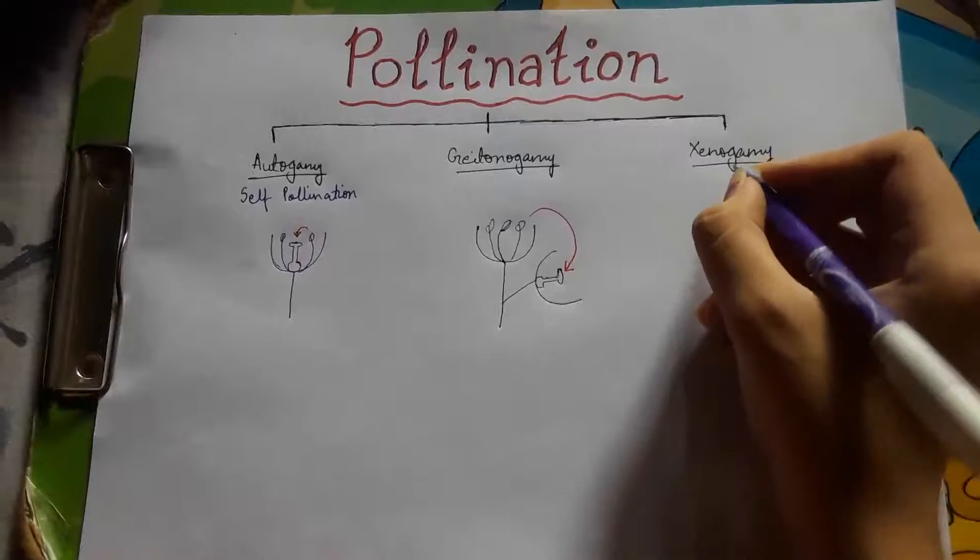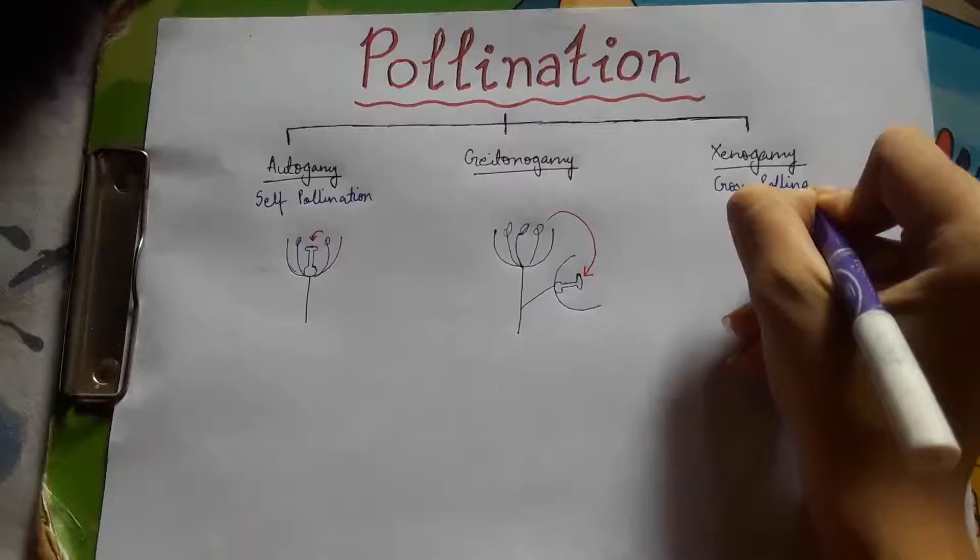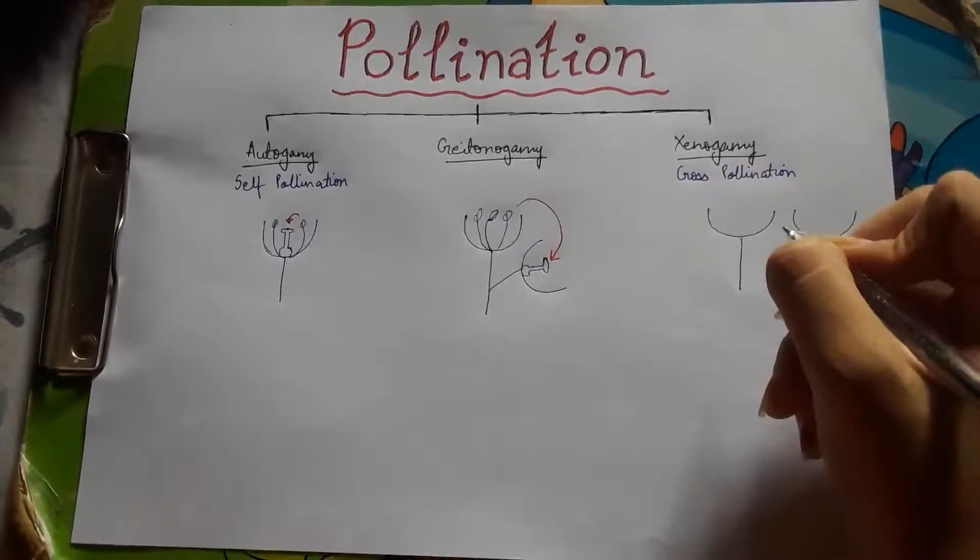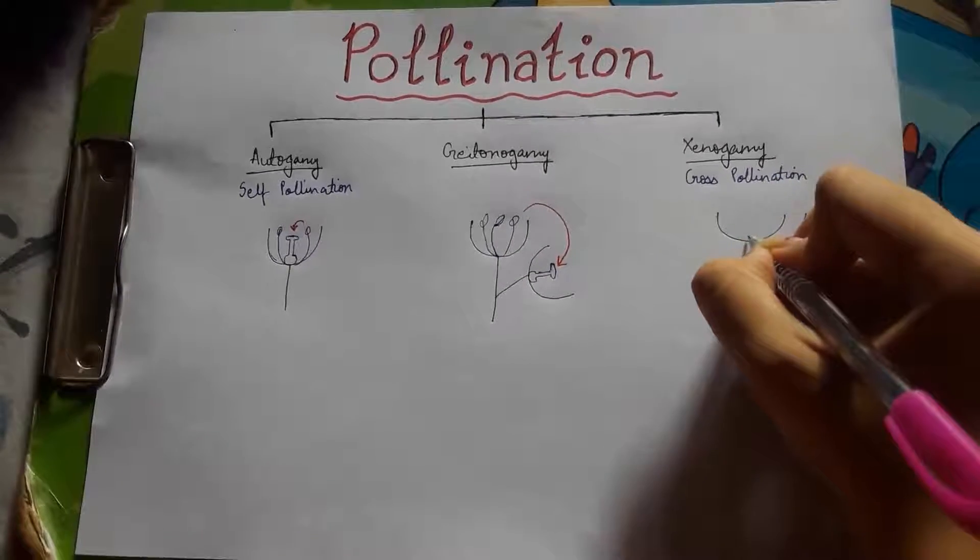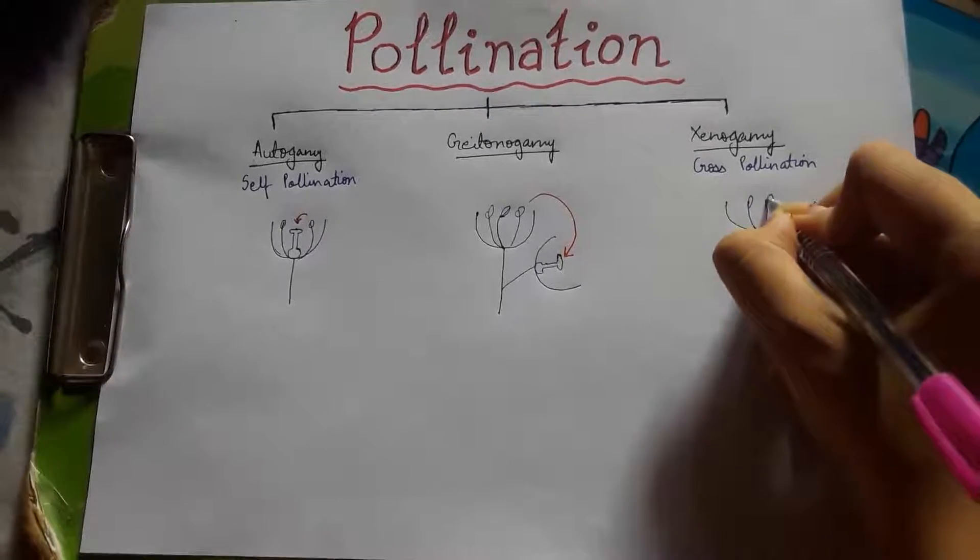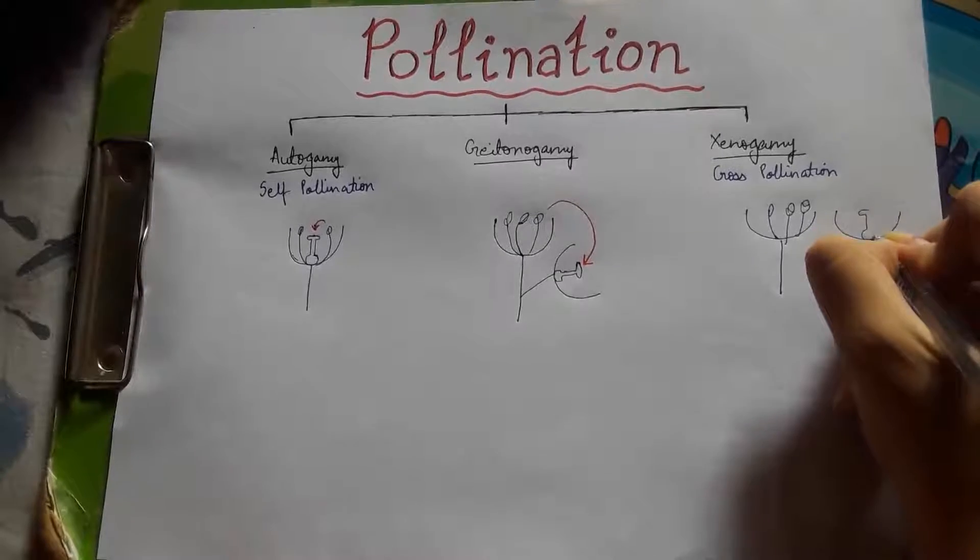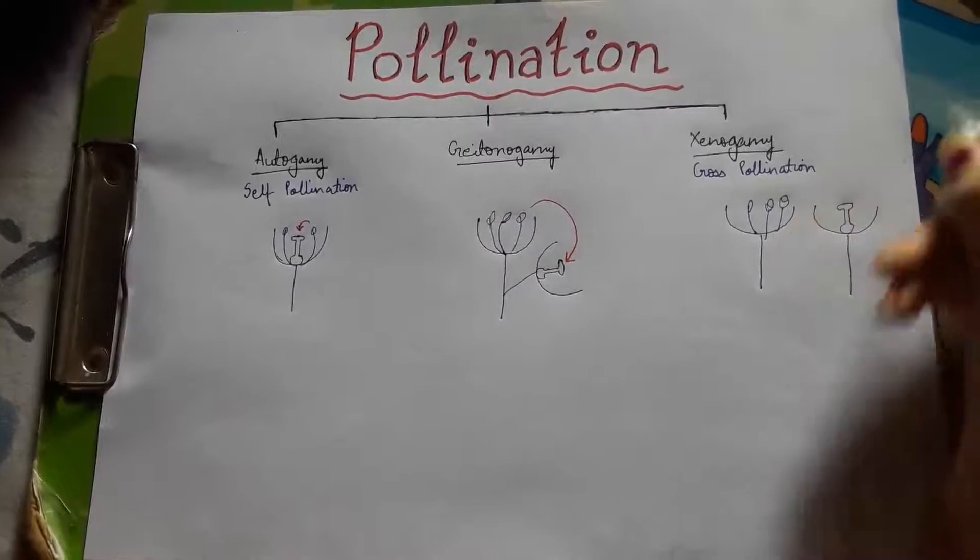Last is xenogamy. It is also called cross-pollination. This is because it is the transfer of pollen from anther of one flower to the stigma of another flower of a different plant.